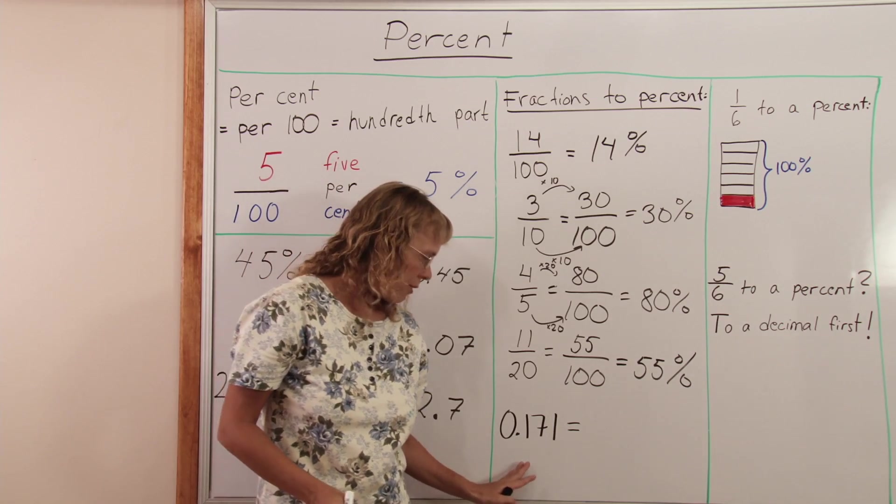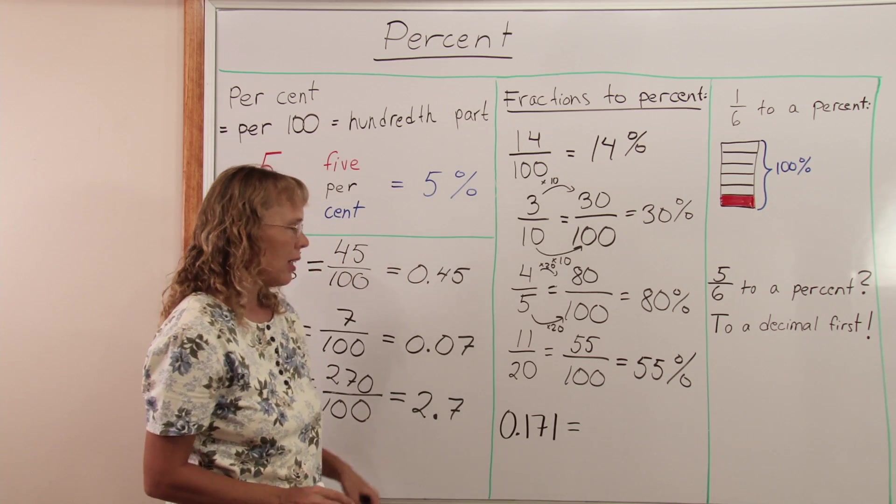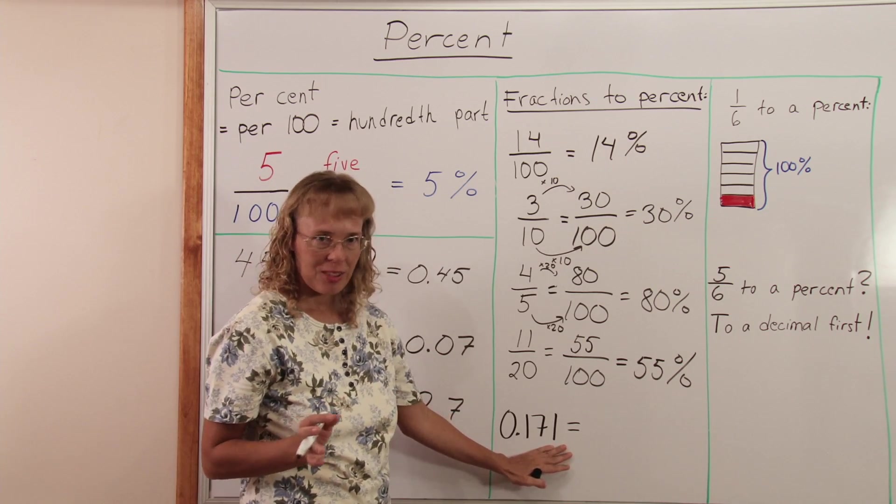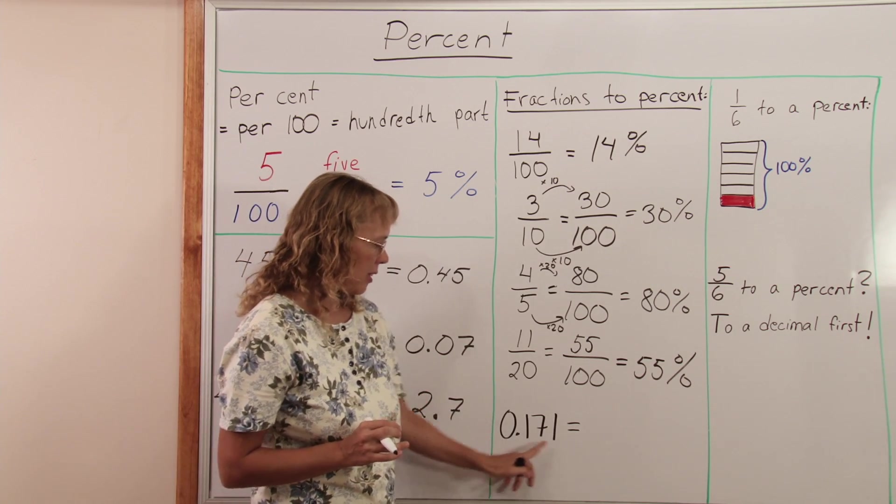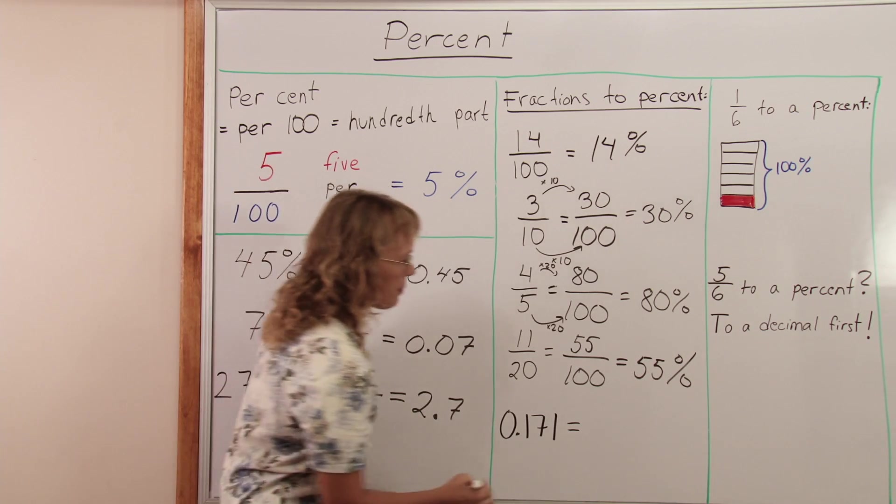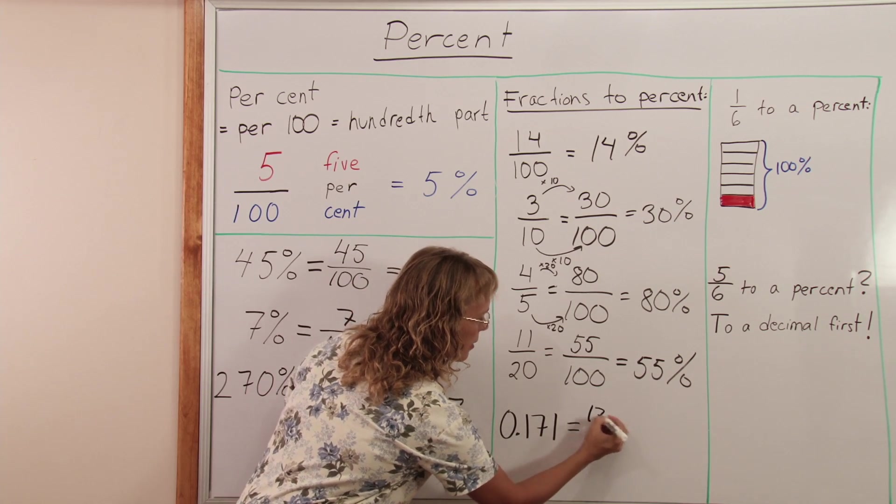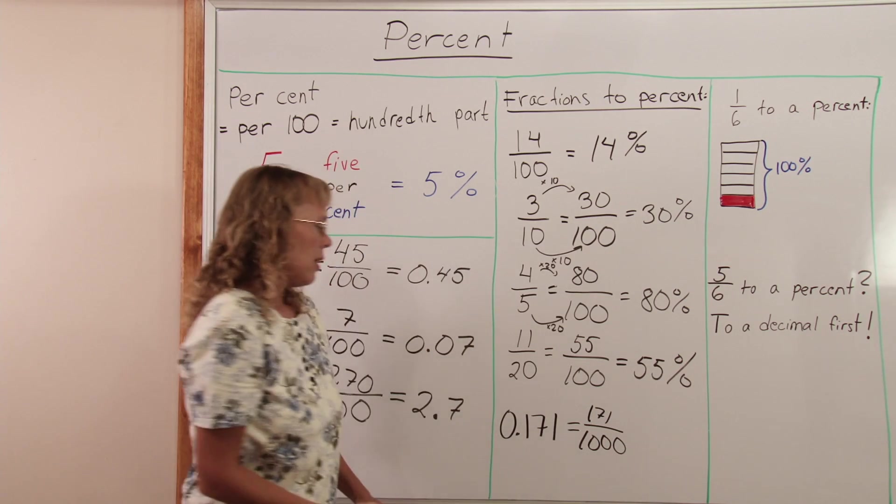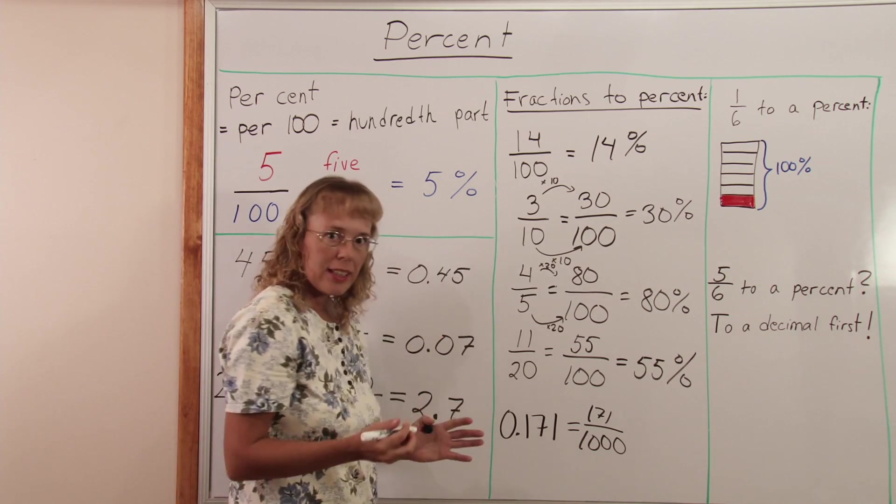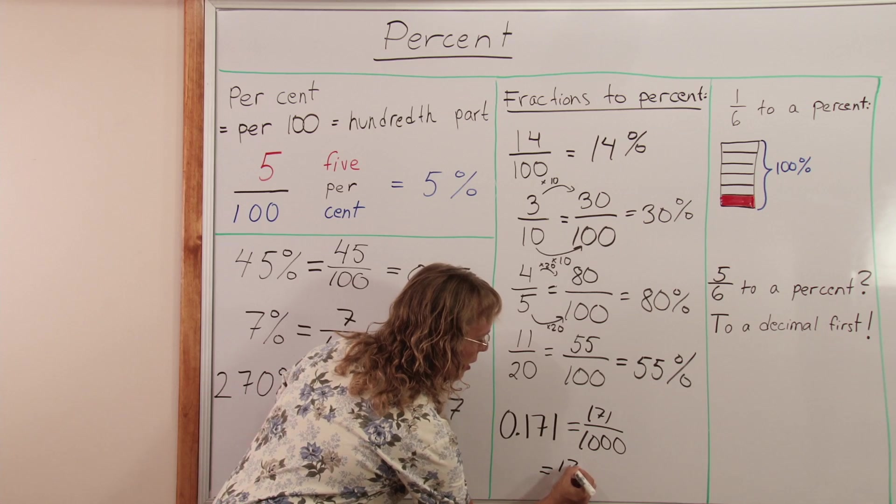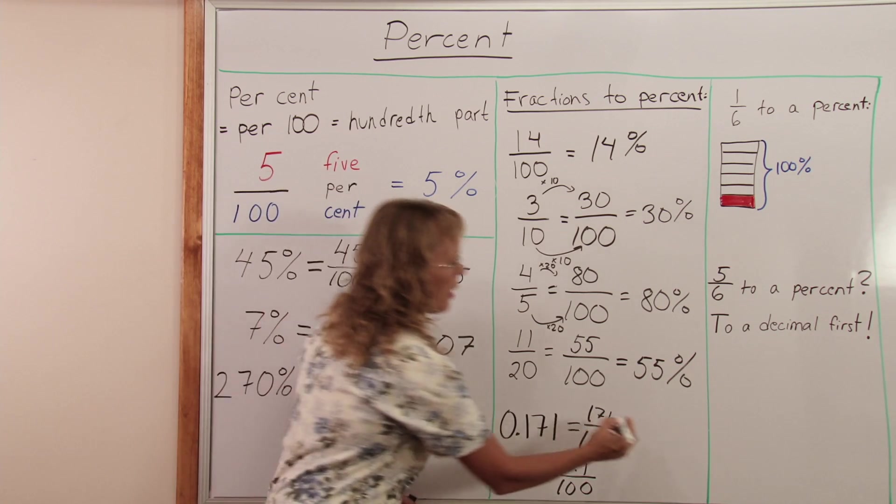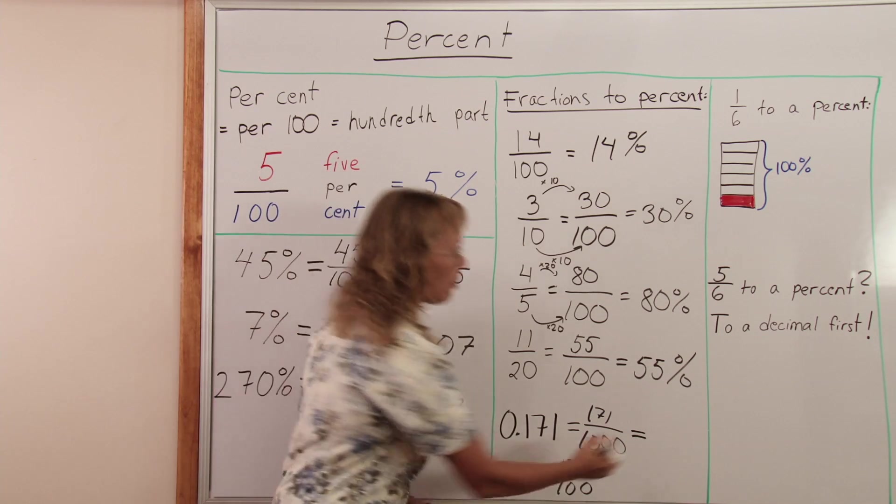My last example here is a decimal, not a fraction. At least that's what it looks like, right? But remember decimals are fractions. This is 171 thousandths. And I could write it like this. But it's not per 100, right? If I were to write it as per 100, it would become 17.1 over 100. And from which we can then just write 17.1 percent.